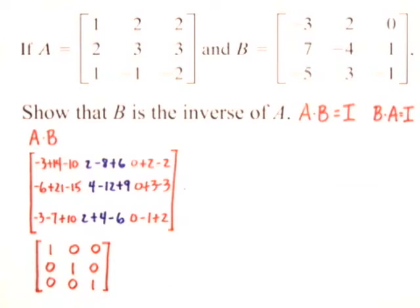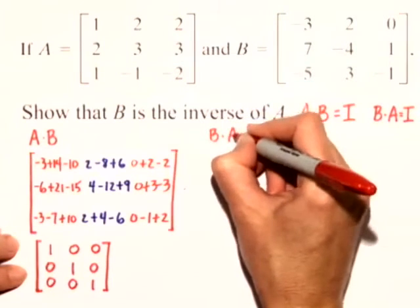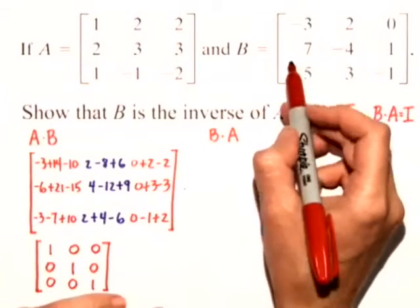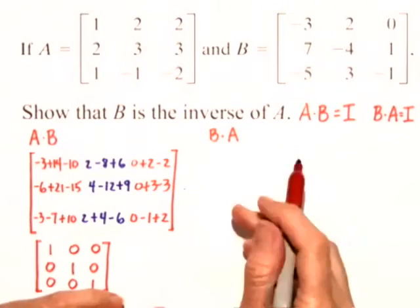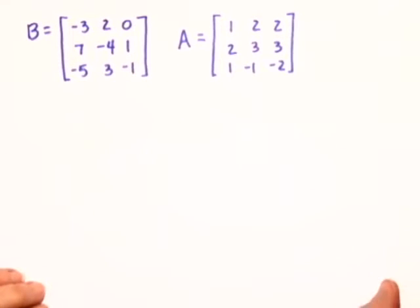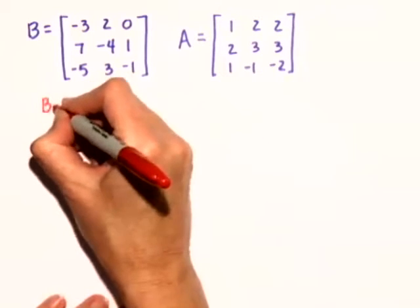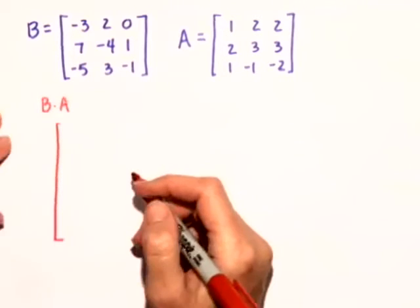So I've shown that if I multiply A times B, I do get the identity matrix. But I also have to show that B times A is also the identity matrix. In some cases it's easier to rewrite them in the order we're going to multiply. So in order to multiply B times A, I'm going to do that on another sheet of paper. When we check B times A, it's nice to write the first matrix first — in this case B — and the second matrix second, A. So B times A will also show it is equal to the identity matrix. Let's multiply that out.